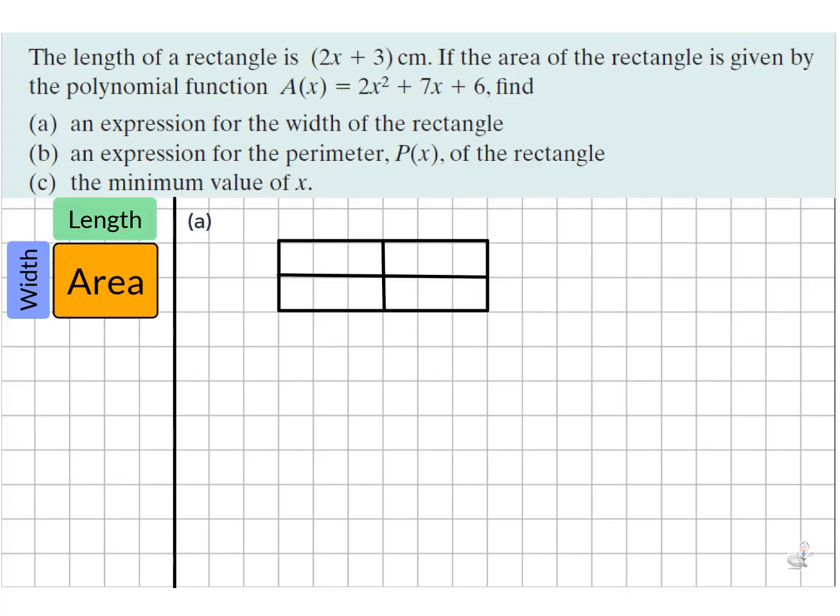We're going to use the array method for this using a quadratic grid. On top of it, we place the given 2x plus 3 factor. We place the area inside this. The 2x squared goes in the top left hand side because we've multiplied out a few of them, and then the plus 6 will go in the bottom right hand corner. Now we're ready to do some division.